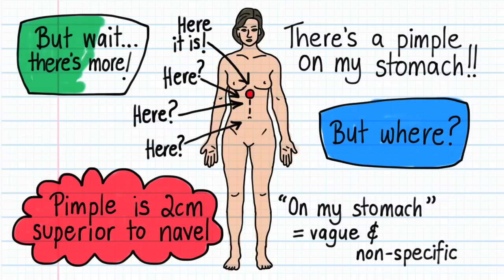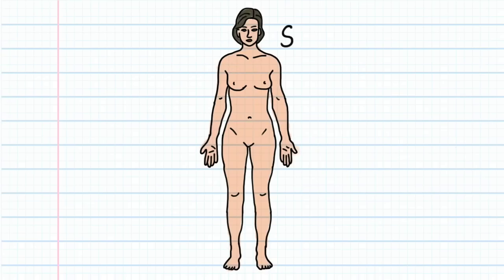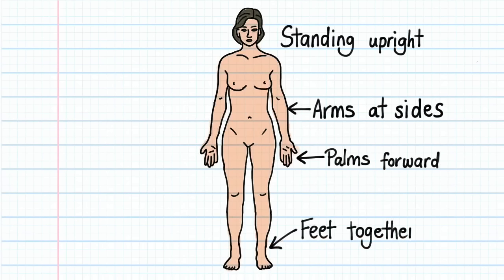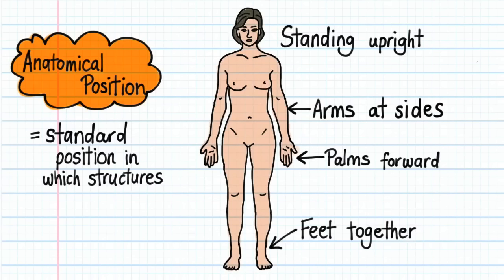Before we move on from this picture, take a good look at how the woman's body is positioned in this drawing. Note how she's standing upright, arms at sides, palms facing forwards, and feet together. We call this the anatomical position, and it's the international standard position in which structures of the human body are described. Whenever you use anatomical terms, always apply them to a person standing in the anatomical position.